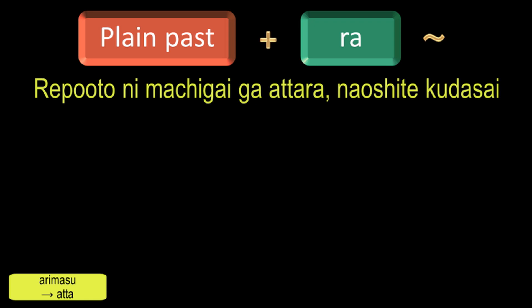The verb Furimasu means to fall or precipitate, and it is used in case of rain or snow. Its past tense is Furimashita and the plain past form is Futta. By adding Ra, we will get the condition Futtara, which means if it rains.